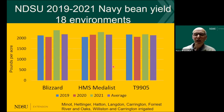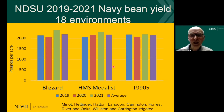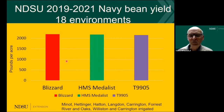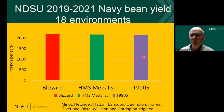Looking at navy beans as a closing topic, we examined navy bean performance over 18 environments across three years. Looking at the summary slide with average yields, Blizzard, Medallist, and T9905 all showed similar yields across all those environments.